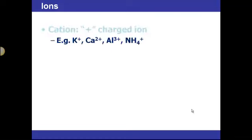Here are some examples of common cations. Potassium and calcium will lose two because it's in the alkaline earth metal category or group two. Aluminum would lose three electrons because it's in main group three.